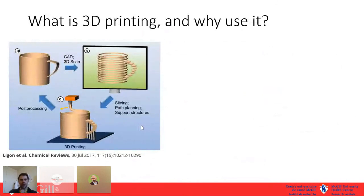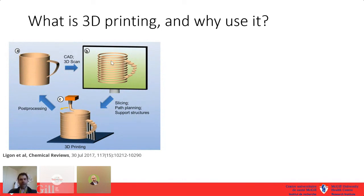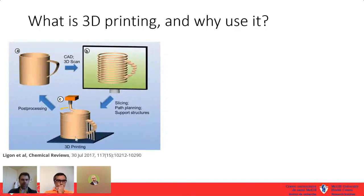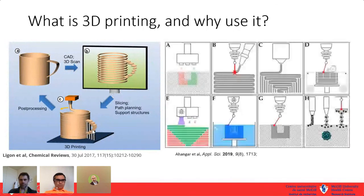We go from a computer design model — drawn in 3D software, from a scan, or designed from scratch — and then convert it into a code that the 3D printer understands using slicing software. The slicing software breaks the model into individual layers, which the printer then executes to produce the final object.